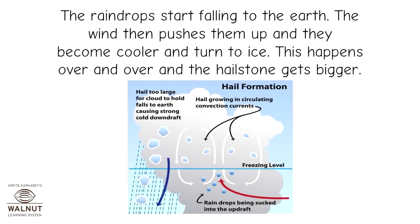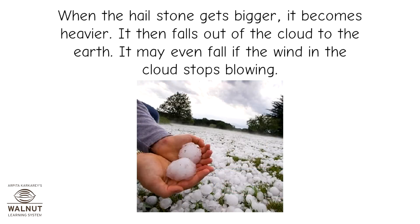The raindrops start falling to the earth. The wind then pushes them up and they become cooler and turn to ice. This happens over and over and the hailstone gets bigger. When the hailstone gets bigger, it becomes heavier. It then falls out of the cloud to the earth. It may even fall if the wind in the cloud stops blowing.